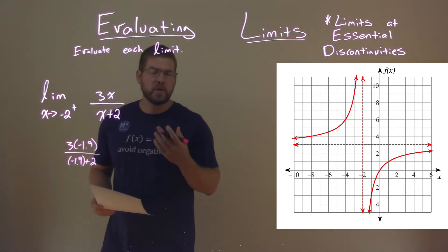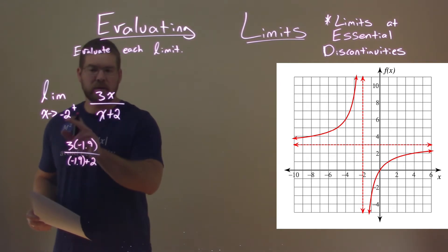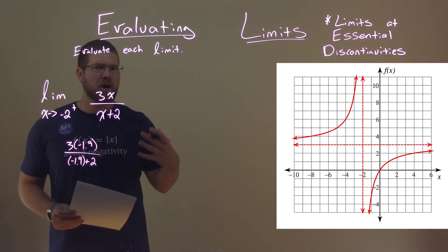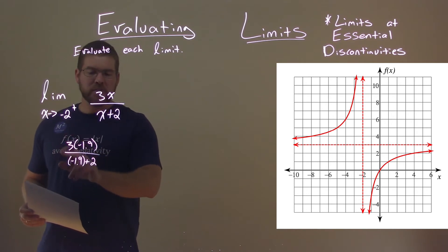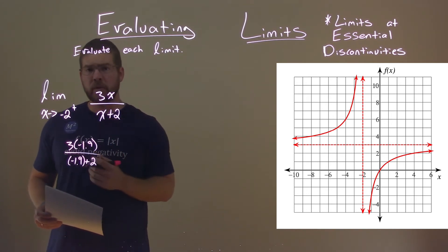Now, what I'm really looking for here is I know this denominator is approaching 0 as we get closer to negative 2, and it's going to cause the infinity here. So I'm not really actually trying to evaluate what these values are, just if they're positive or negative.